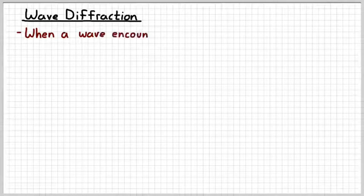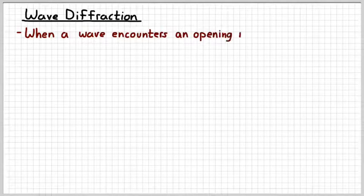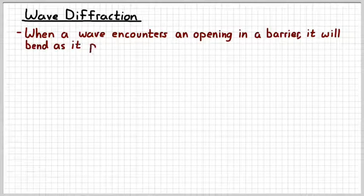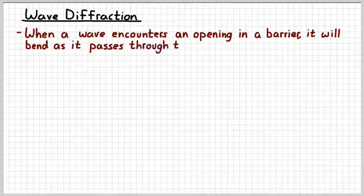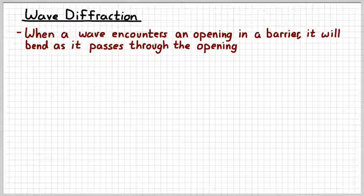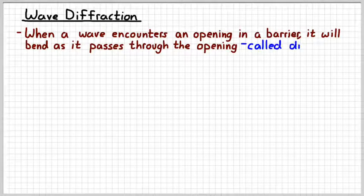Wave diffraction is a phenomenon that is unique to waves. Particles do not do this. Basically, wave diffraction is when a wave encounters an opening in a barrier, like a door in a wall, for example, and it will bend as it passes through the opening. This bending is called diffraction.